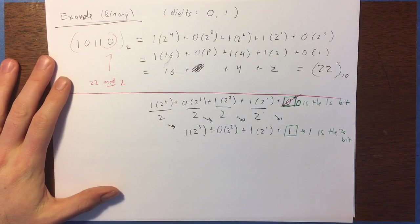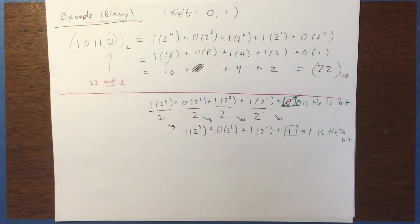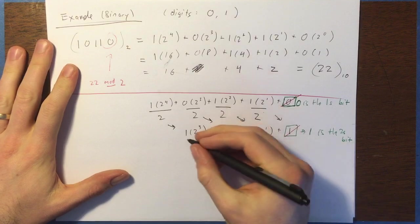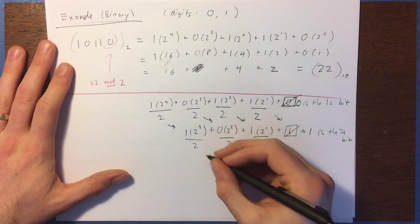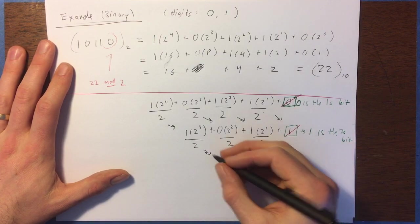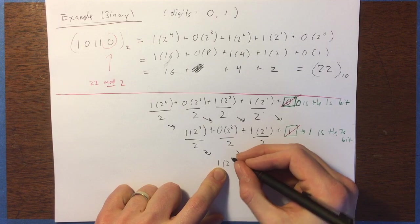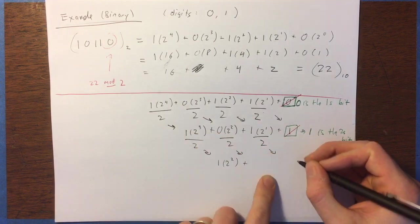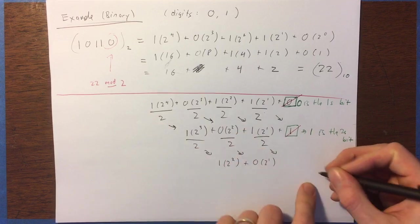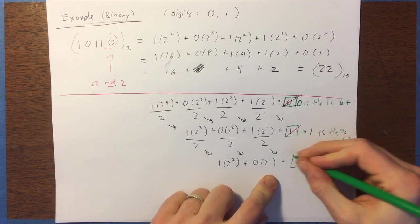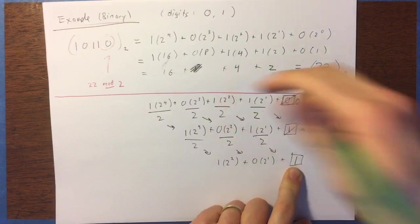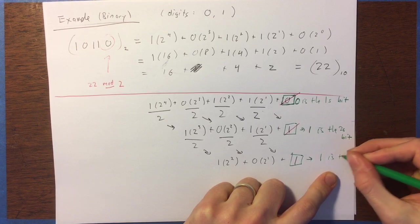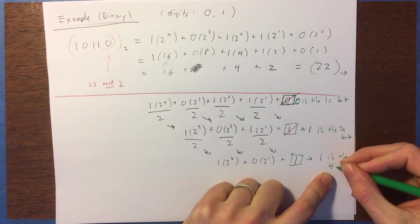Now we remove that remainder after division and divide by 2 again. Everything shifts down — the powers all go down by 1. So this 1 comes over to give 1 times 2 squared, then 0 times 2 to the 1, and then the plus 1. That 1 is the 1's bit of this number, but because we've divided by 2 twice, it's actually going to be the 4's bit.